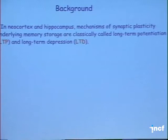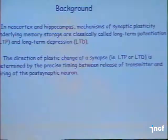In the neocortex and hippocampus, mechanisms of synaptic plasticity that underlie memory storage are classically called long-term potentiation (LTP) and long-term depression (LTD). The direction of plastic change at a synapse — whether a given bout of activity produces LTP or LTD — is in most instances determined by the precise timing between the release of glutamate and the firing or depolarization of the postsynaptic neuron. That's what's referred to as spike timing-dependent plasticity.